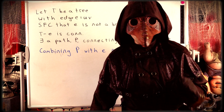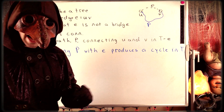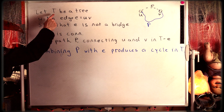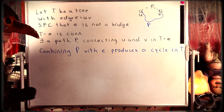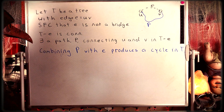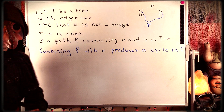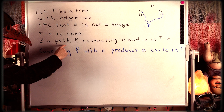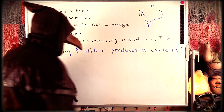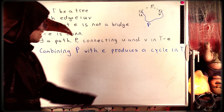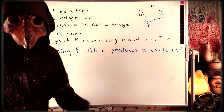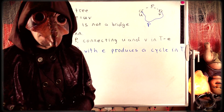Let's walk through this logic one more time. We want to prove that every edge of a tree graph must be a bridge. A tree graph is a connected graph with no cycles. So we take a tree graph, take an edge from the tree, and suppose for contradiction that edge is not a bridge. Then we can delete the edge from the tree and get a connected graph. Since that graph is connected, there must be a path connecting the end vertices of the deleted edge. If we combine that path with the edge we originally deleted, that produces a cycle in the original tree T, which contradicts T being a tree.